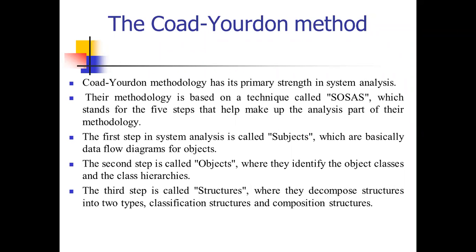The first step is Subjects, which includes data flow diagrams for objects. The second step is Objects, which identifies classes and class hierarchies. The third step is Structures, which breaks down into two types: classification structure, which handles the inheritance connection between related classes, and composition structure, which handles all other connections among classes.